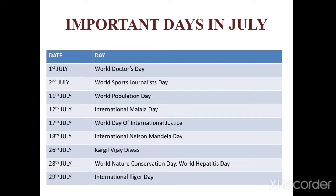Important days in July: 1st July is World Doctors Day. 2nd July is World Sports Journalists Day. 11th of July is World Population Day. 12th of July is International Malala Day. 17th of July is World Day of International Justice.